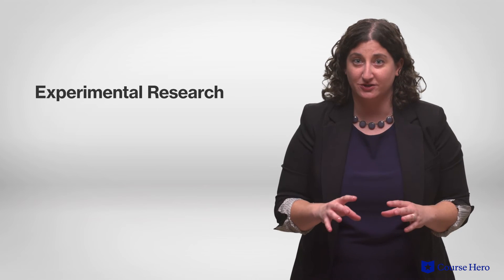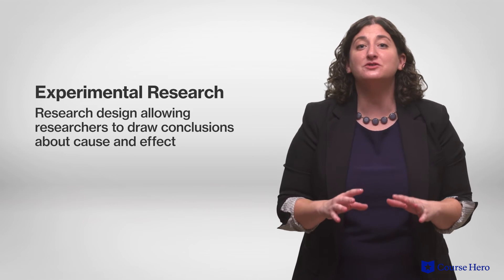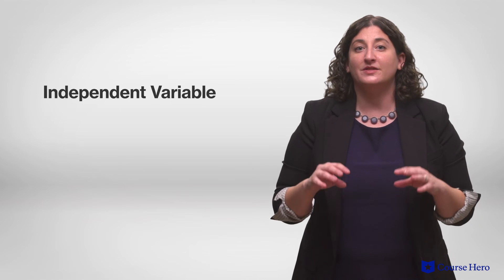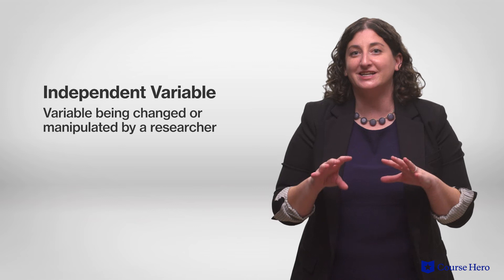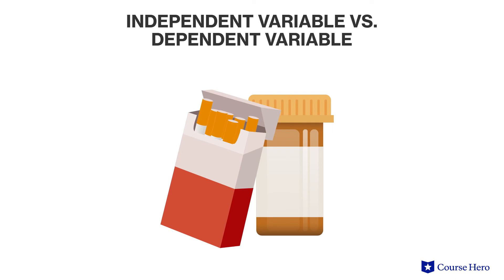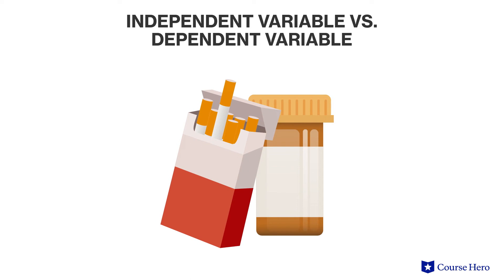In order to say anything about causality, we need to use experimental research, which requires random assignment of participants to experimental and control conditions and allows us to draw conclusions about the causes of events. Experimental research focuses on the relationship between independent and dependent variables. The independent variable is the variable researchers manipulate, and the dependent variable is the one being measured. For example, if testing a medication to stop smoking, the independent variable is whether participants received the medication, and the dependent variable could be how many cigarettes they smoked before and after.